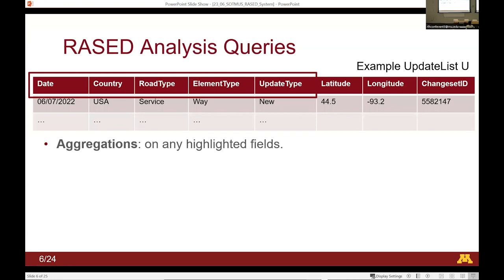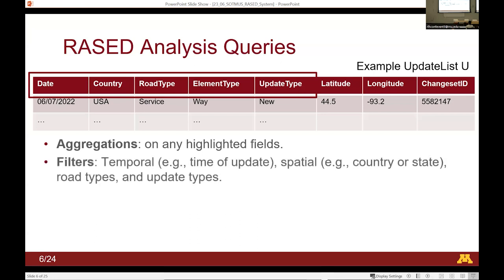Let me show you an example of RASID analysis queries. Imagine we want to construct what we call an 'update list' — this is an imaginary table, there is no such table in OSM. Think of it as having a date of something changed in OSM, the country, the road type like service or residential roads, the element type in OSM, the type of update — whether it's new, a topological update, or just a metadata or tag update — then the location and the changeset ID. You can apply any aggregation and filters on these five highlighted columns.